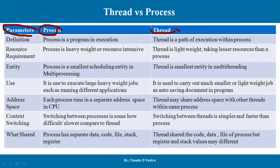The first parameter is definition. What is a process? A process is a program under execution. When the program is executed on the CPU, that is the process. A thread is a path of execution within a process. In one process, one line of execution is called a thread.